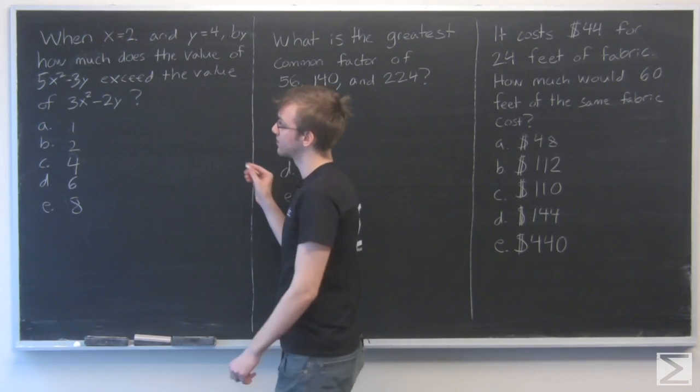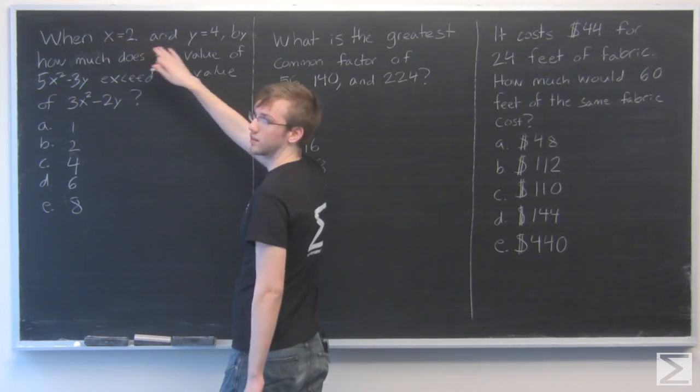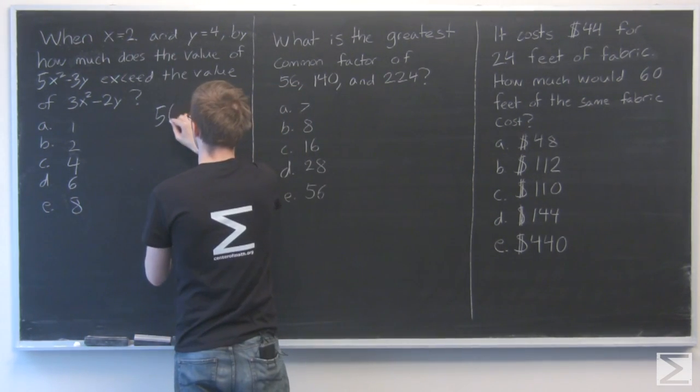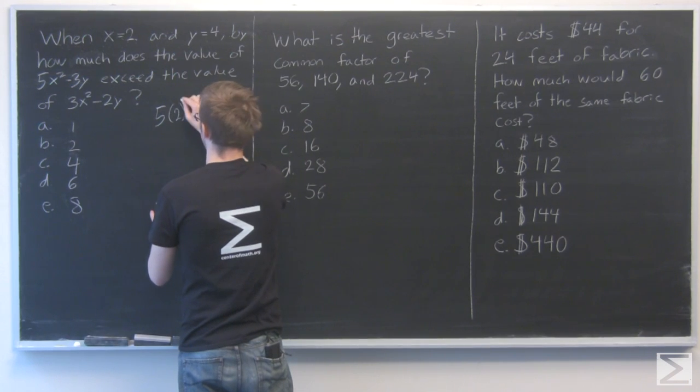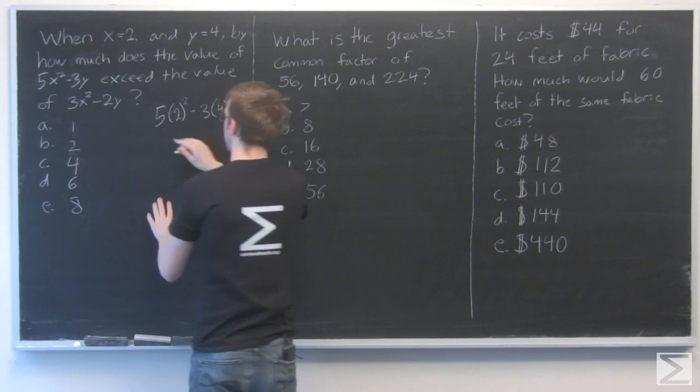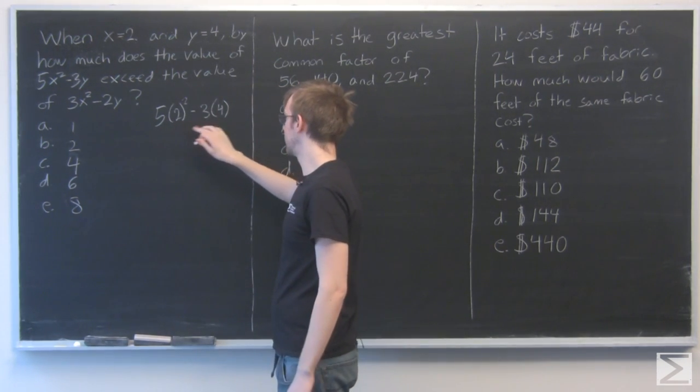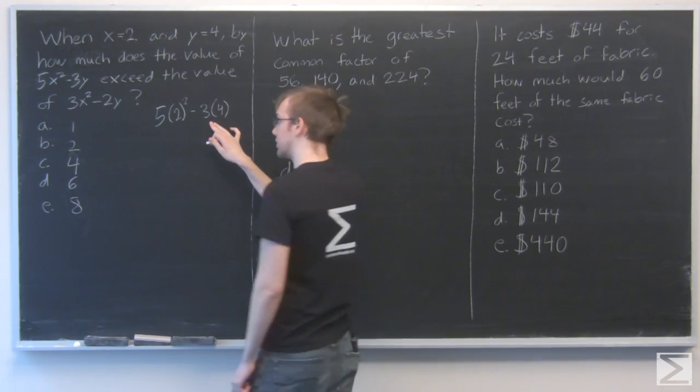So we'll go 5x squared minus 3y and plug in these two values. 2 here and 4 here. 5 times 2 squared is 20 minus 3 times 4 is 12, so we get 8.